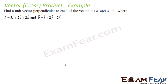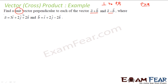Let us take another example: find the unit vector perpendicular to vector A and vector B, where A and B are given. To find a vector perpendicular to two vectors P and Q, we compute P cross Q. To get the unit vector in that direction, we divide by its magnitude: P cross Q divided by the magnitude of P cross Q.